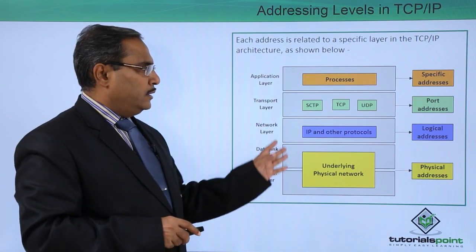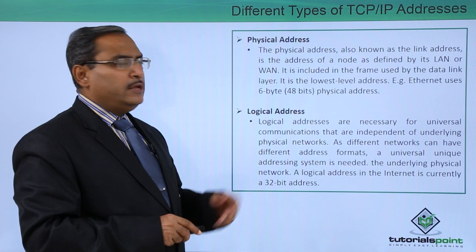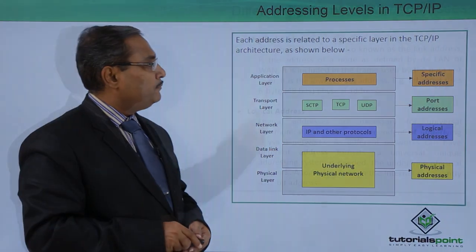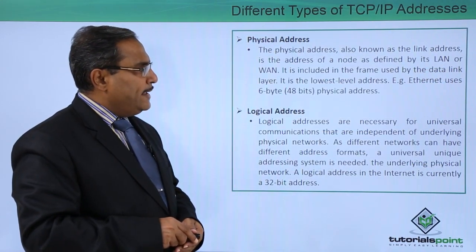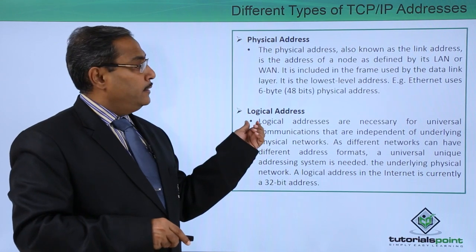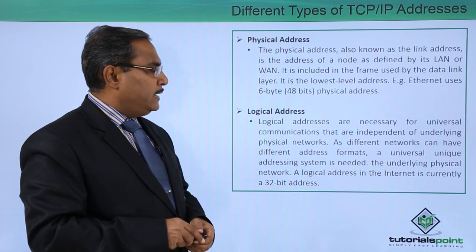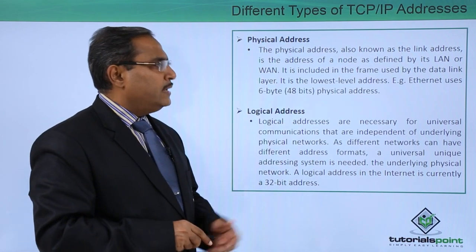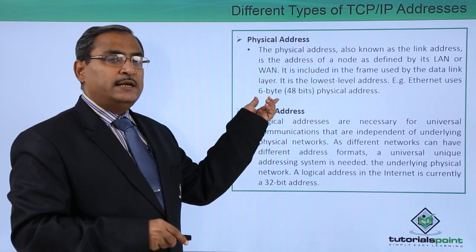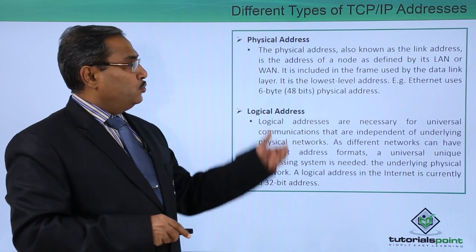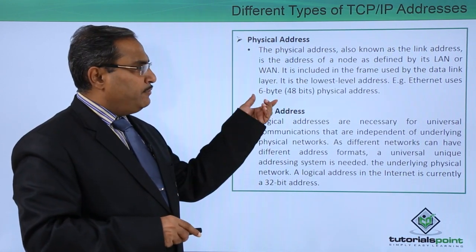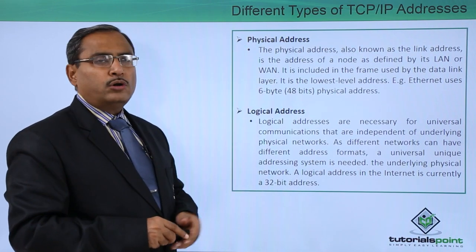Now let us go into the respective address details. First, we are dealing with the physical address, which was in the last layer. The physical address, also known as the link address, is the address of a node as defined by its LAN or WAN. It is included in the frame used by the data link layer and it is the lowest level address. As an example, we can use the Ethernet address, which uses 6 bytes — that is 6 × 8 = 48 bits — a 48-bit physical address.